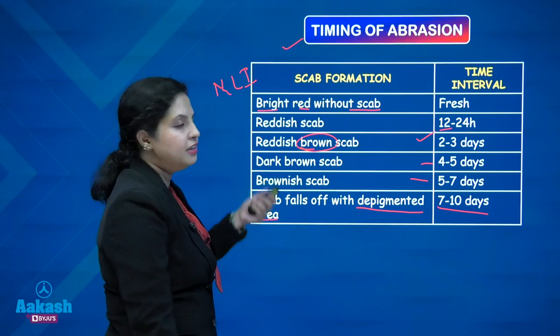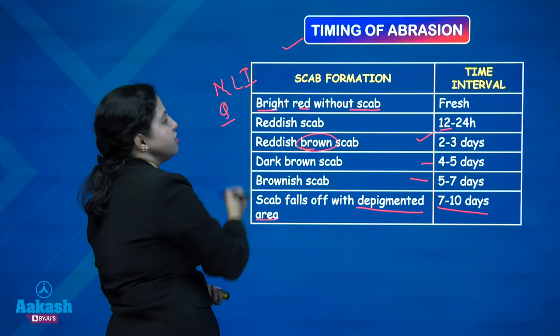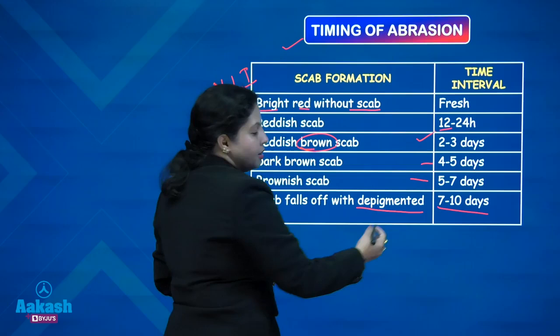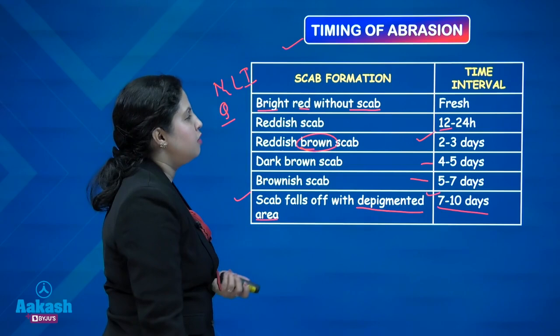This table is important and must be memorized. Commonly asked questions include: when is the scab reddish-brown after how many days of injury, or if the scab has fallen off and the underlying depigmented area is visible, what is the time interval since the injury occurred. These are various questions on the timing of abrasion.